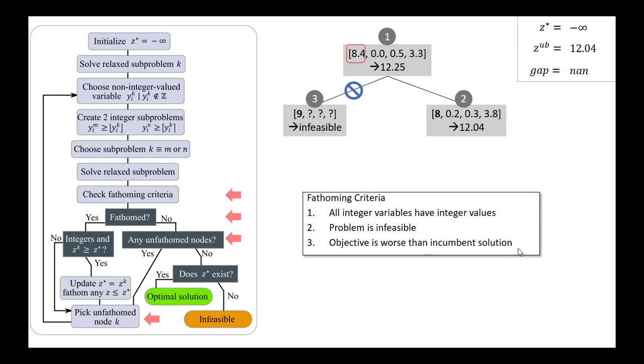Criteria 3: the objective is worse than the incumbent solution. We don't have an incumbent solution, so we don't have to worry about that yet.